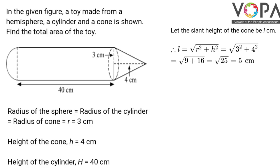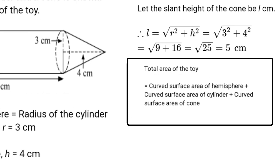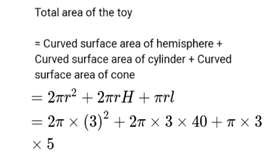Now the total area of the toy is to be calculated and that can be equal to curved surface area of the hemisphere plus curved surface area of the cylinder plus curved surface area of the cone. Now we will put their formulas. So total area of toy will be equal to 2πr² + 2πrH + πrL.